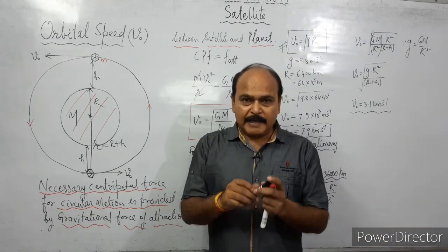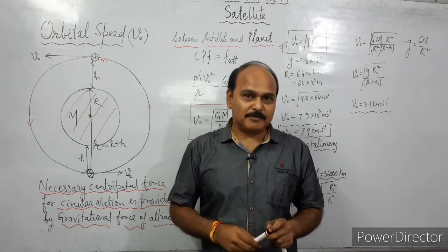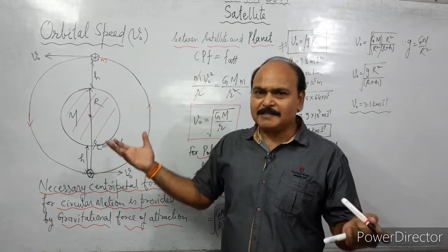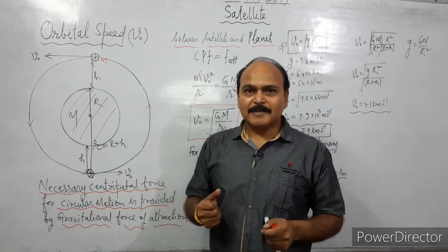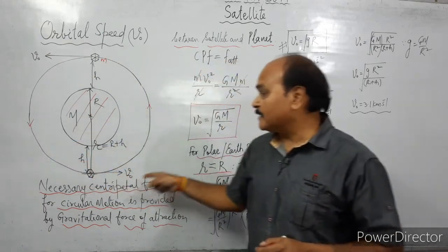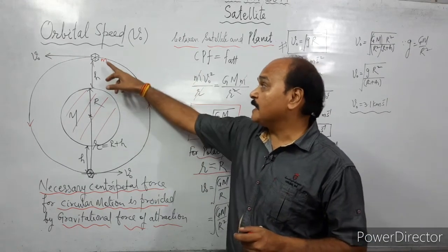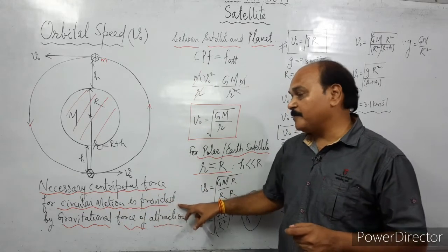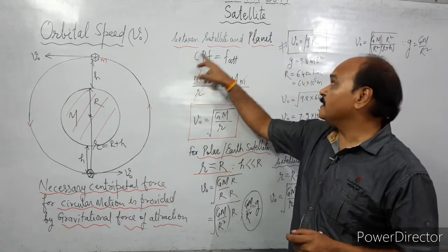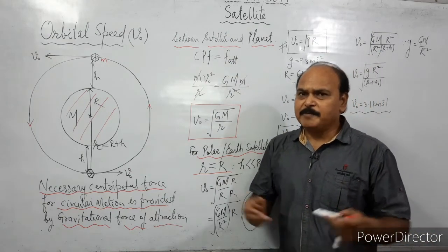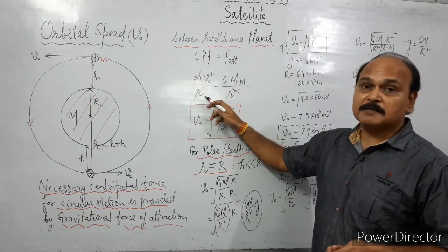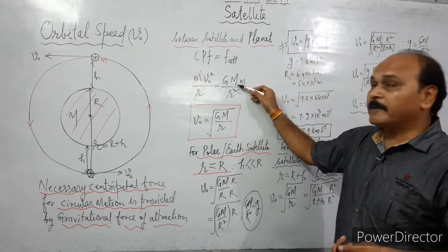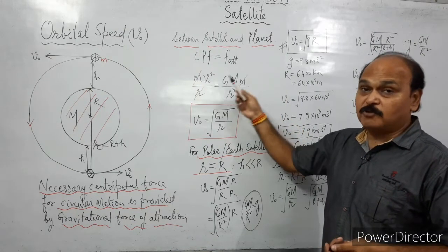We know that there cannot be circular motion without centripetal force. Here the satellite is moving in a circular orbit. So where is this centripetal force coming from? The centripetal force required for circular motion of the satellite is provided by the gravitational force of attraction between the satellite and the planet. Centripetal force is mv²/r and the force of attraction between planet and satellite is G times mass of the planet times mass of the satellite divided by r squared, which is the square of the distance between them.